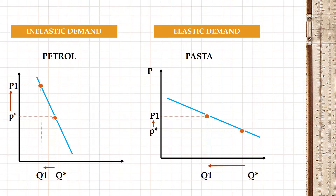Petrol is regarded as a necessity good and there are not many good substitutes for petrol. So even if price rises a lot, you will not stop consuming petrol. You might consume a little bit less, or if the price decreases, you might consume a little bit more. But quantity demanded will not change a whole lot due to the nature of this commodity, and the shape of the demand curve is steep.